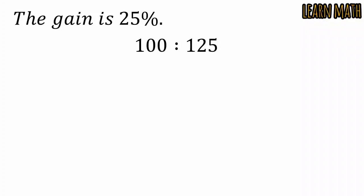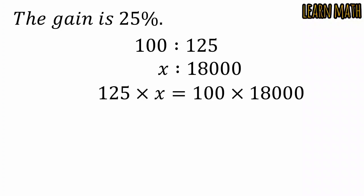If the cost price is equal to x and the price with the gain is equal to 18,000, we can write like this. After that we can write it in this form, dividing both sides by 125 and cancel 100 with 125.